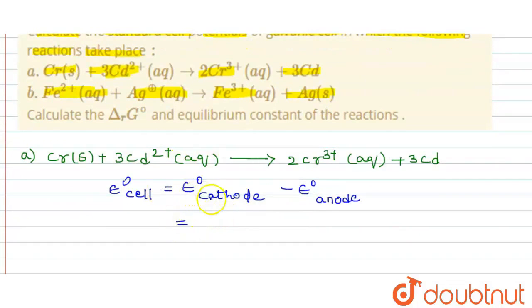Here, for the cadmium and the chromium, E° cathode minus E° anode, we have the value. We will get the value minus 0.40 minus of minus 0.74. We get it as plus 0.34 volts.